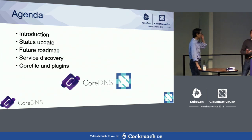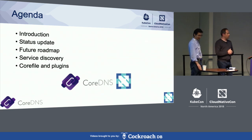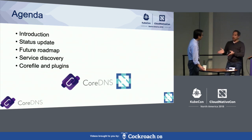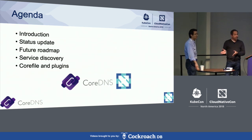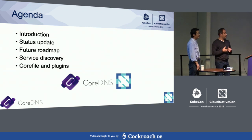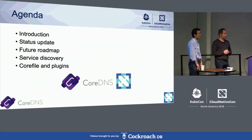The agenda for today looks something like this: we'll start with a brief introduction to CoreDNS so you can find out what it's about. Then I'll give you a status update on where it is with relation to Kubernetes. Then Yong will do the heavy lifting — he'll talk about the roadmap, the use of CoreDNS for service discovery, go through the core file, which is the CoreDNS configuration file, and show you some of the CoreDNS plugins in action. At the end we should have time for Q&A.